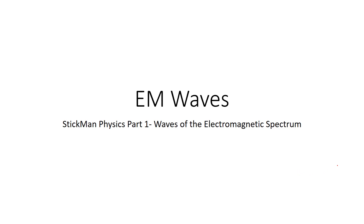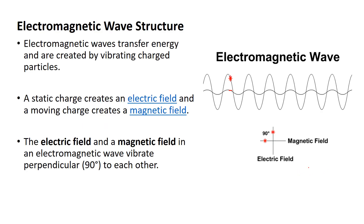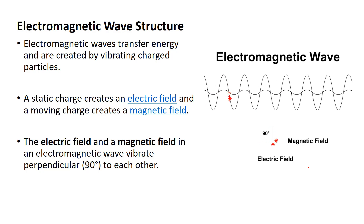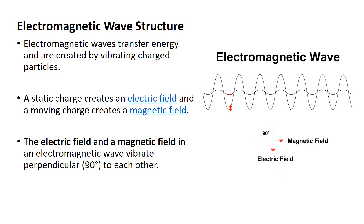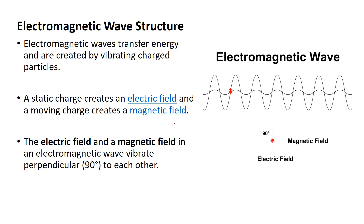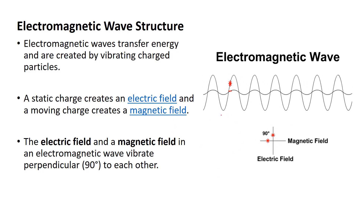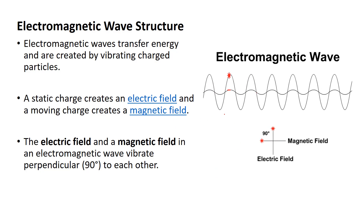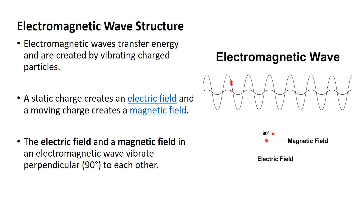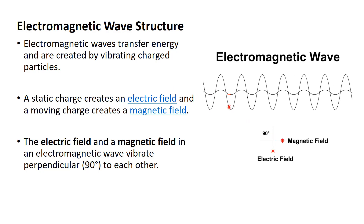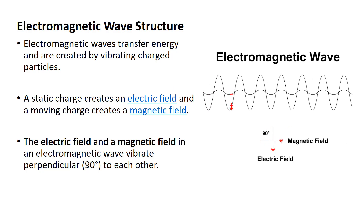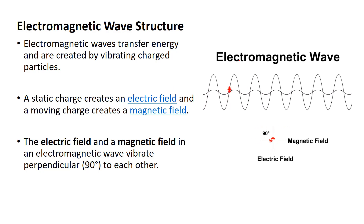This is my first lesson on the waves of the electromagnetic spectrum. We're going to look at all the types of electromagnetic waves, and they have a basic structure, which is created from a static charge, which would have an electric field around it, and a magnetic field that is created from a moving charge.